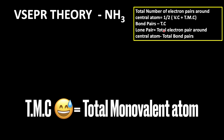The bond pair is equal to the total number of atoms attached to the central atom, Tc. If we find the total number of electron pairs and bond pairs, we can find the lone pair, which equals total electron pairs around the central atom minus total bond pairs. Using this formula, let us find out the lone pairs and bond pairs.